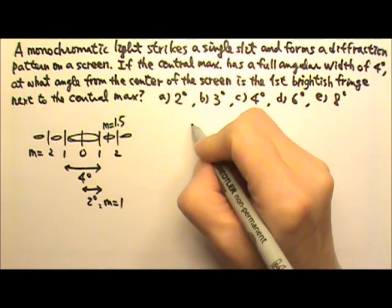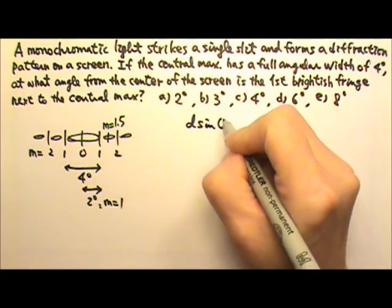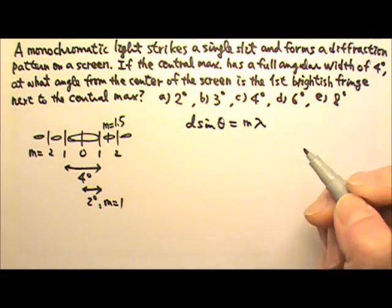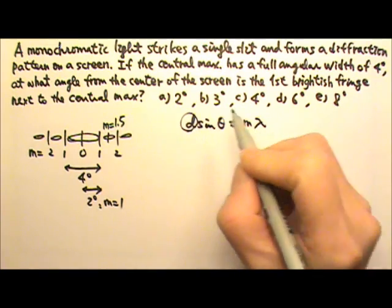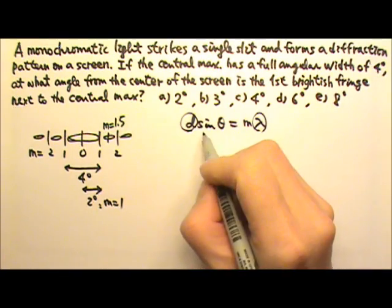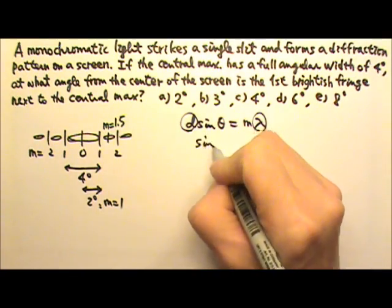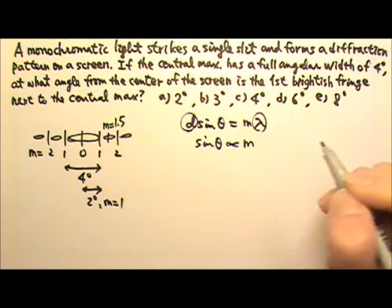For a single slit diffraction, we have D sine theta equals M lambda. And the D and the wavelengths are the same. That means sine theta would be proportional to the M value.